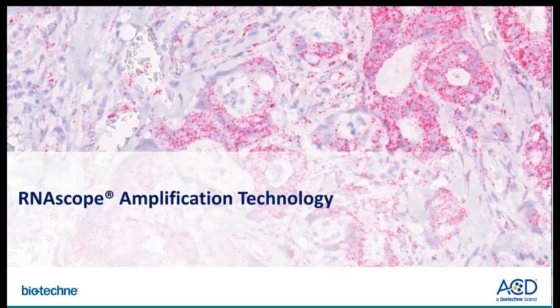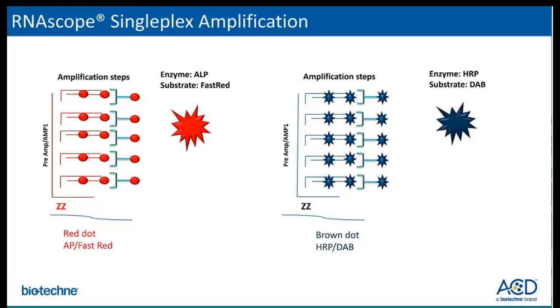In the next few slides, I will discuss the RNAscope amplification and detection systems for the different manual assays. The singleplex amplification system includes the amplification tree, which is then tethered by an enzyme. The red assay utilizes alkaline phosphatase and can be visualized by a fast red chromogen. For the brown assay, it utilizes HRP and is visualized by DAB chromogen.